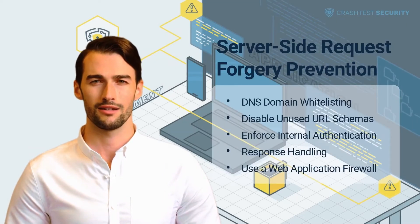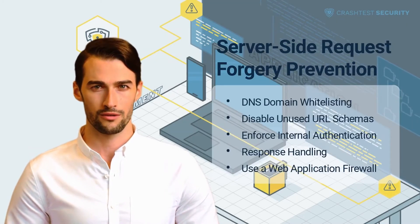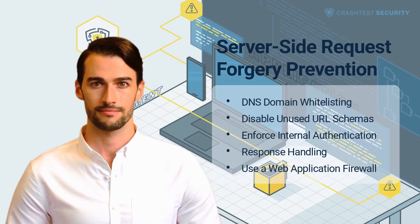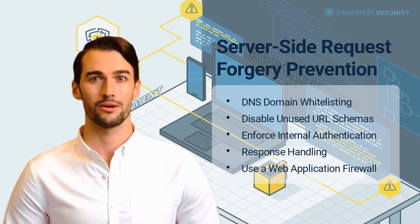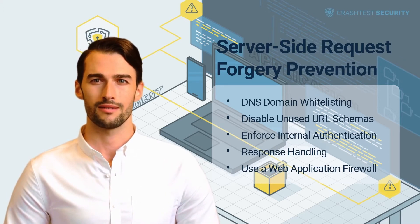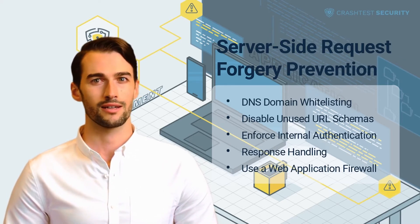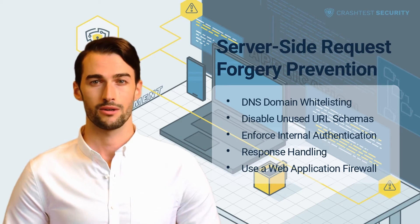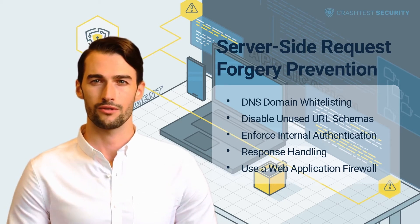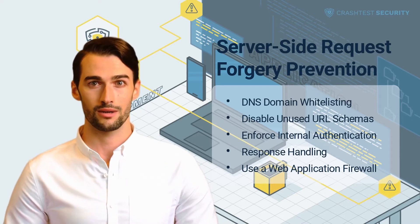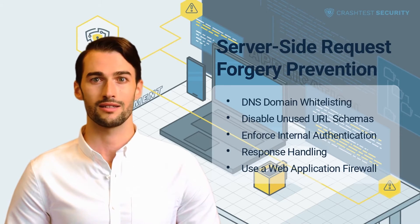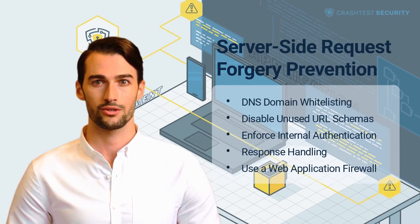Some standard techniques to prevent server-side request forgery attacks include DNS domain whitelisting. An ideal approach to restrict sending malicious requests from an application's backend server for unauthorized actions is to allow access to the application only to the required external entities by creating a domain whitelist. Whitelisting offers a trusted approach for communication with allowed DNS entries and IP addresses, ensuring the system's assets are only accessible from valid machines.